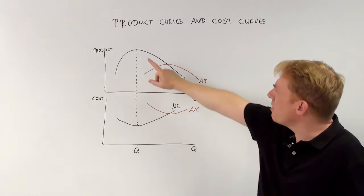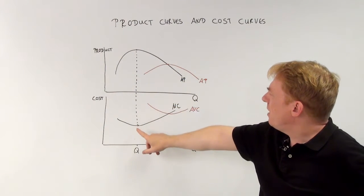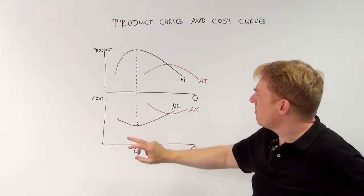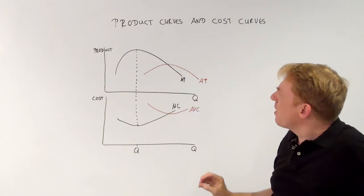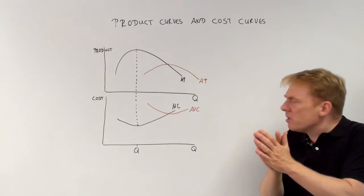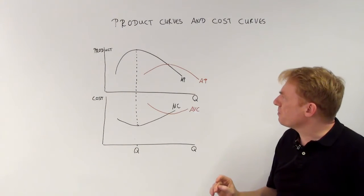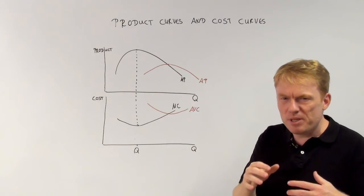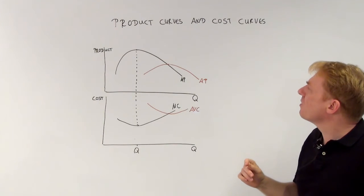The maximum of marginal product is the same as the minimum of the marginal cost curve. This is the key combination between marginal product and marginal cost.